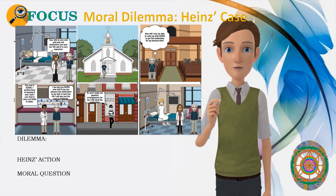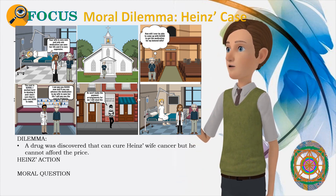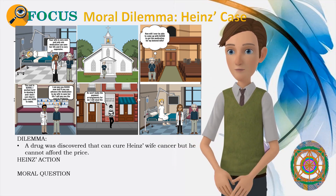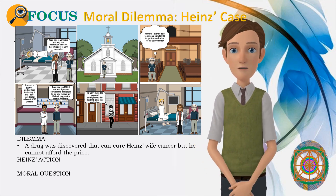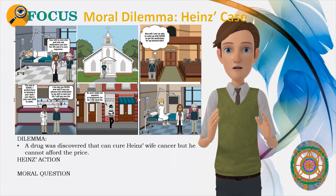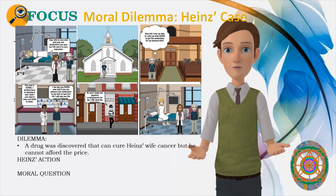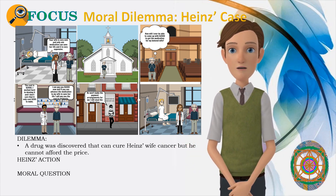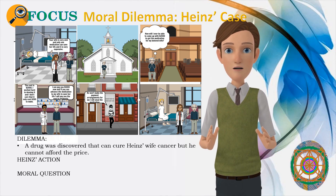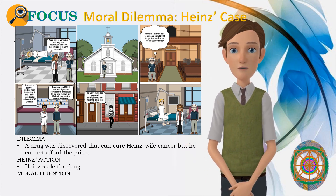To better understand the research of Kohlberg, let us look at one of the dilemmas used: the case of Heinz. Heinz's wife was dying from a particular type of cancer. Doctors said a new drug might save her. The drug had been discovered by a local chemist, and Heinz tried desperately to buy some, but the chemist was charging 10 times the money it cost to make the drug, and this was much more than Heinz could afford. Heinz could only raise half the money, even after help from family and friends. He explained to the chemist that his wife was dying and asked if he could buy the drug cheaper or pay the rest of the money later. The chemist refused, saying that he had discovered the drug and was going to make money from it. The husband was desperate to save his wife, so later that night he broke into the chemist's and stole the drug.